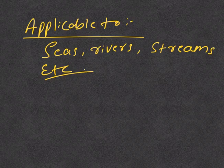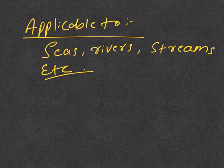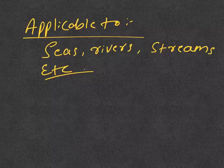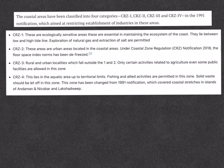The most recent modification was in 2018, based on the recommendation of the Shailesh Nayak Committee. These rules cover stretches of seas, bays, estuaries, creeks, rivers, and backwaters. As per the rules, the coastal zones have been divided into four categories: CRZ 1, 2, 3, and 4.